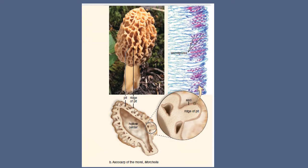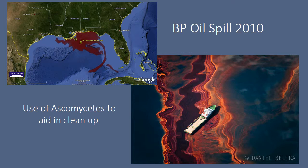Looking closely at an ascocarp — the fruiting body of an ascomycete — we can zoom into one of its folds to see the ascus structure and the ascospores produced within it. Those ascospores are produced sexually. A notable example of ascomycetes' practical importance: during the BP oil spill of 2010 in the Gulf Coast, ascomycetes were used to aid cleanup because they can digest fuel.